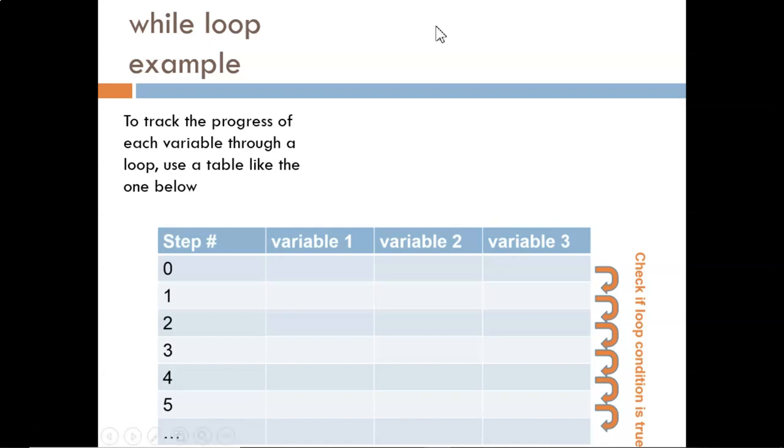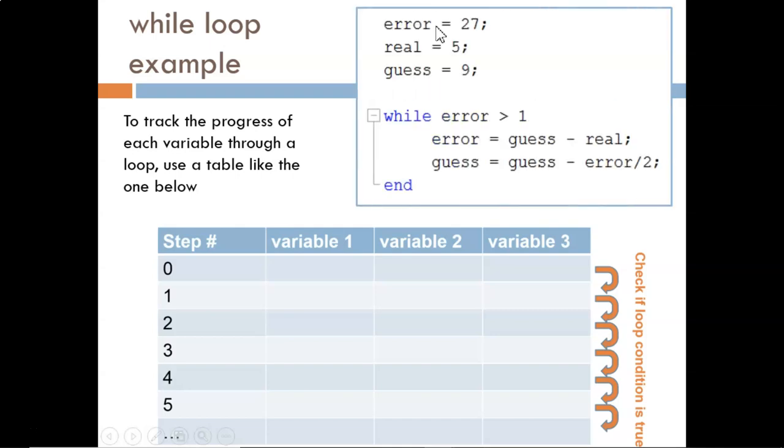Let's look at this example. First, I write the names of the variables into the table. Here, we have error, real, and guess. Then, next to step 0, I write the values of the variables before reaching the loop. Error begins at 27, real at 5, and guess at 9.